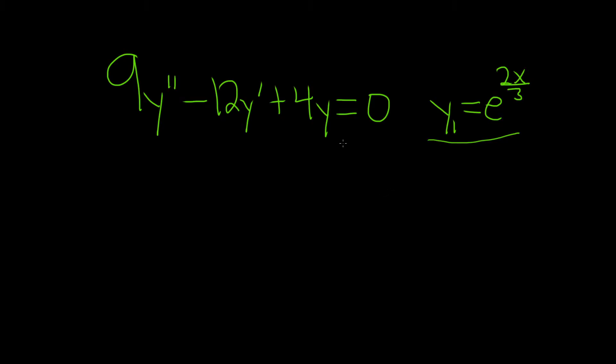Before we get to the formula, let's write this in standard form, since the formula does require that. So we can divide everything by 9. We want to make the coefficient of y double prime a 1.